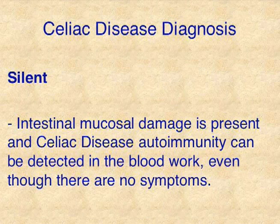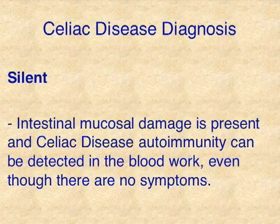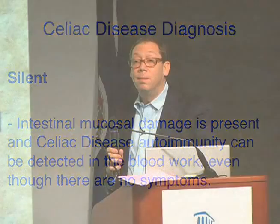The silent form of celiac disease: intestinal mucosa damage is present and celiac autoimmunity can be detected in the bloodwork, but there are no physical symptoms that anybody is reporting. This is similar to what we see with osteoarthritis, where some people have pain and some don't. There is a silent form of most diseases.